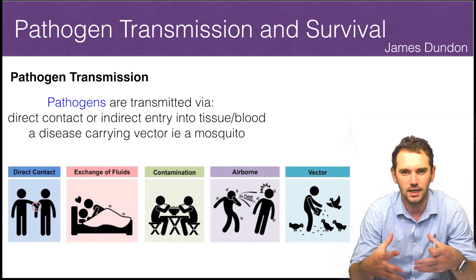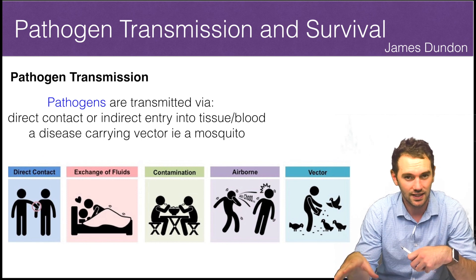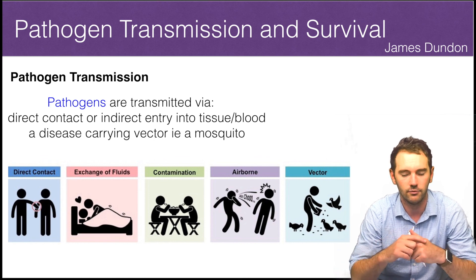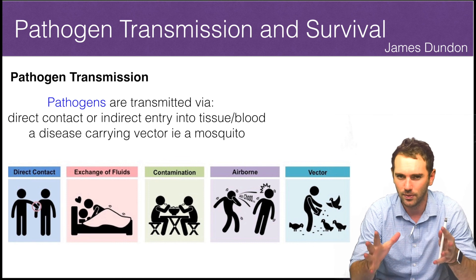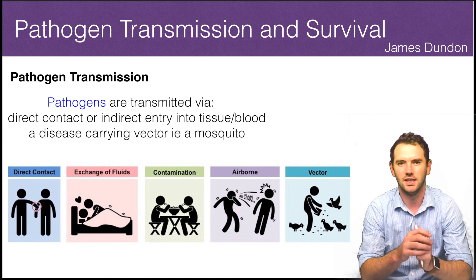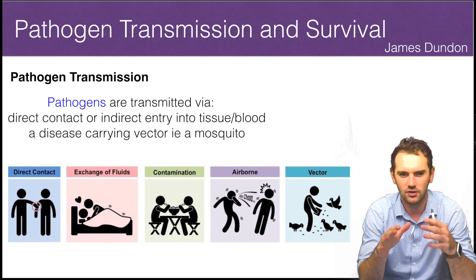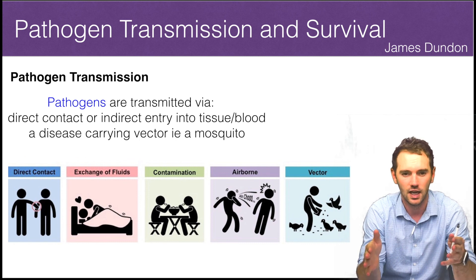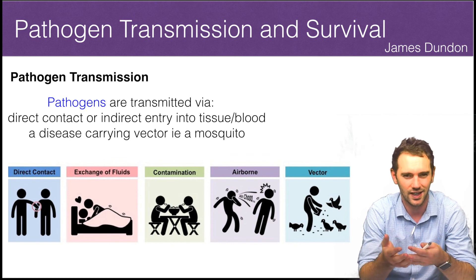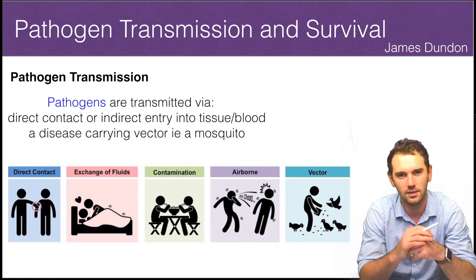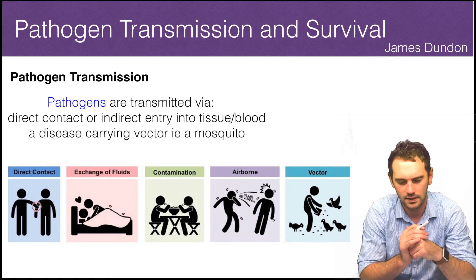An indirect version might be: I sneeze, I put my hand on an escalator, and the next person puts their hand there and contracts it from me indirectly. Bathrooms are a big problem with this — in Australia, to get out of a bathroom you have to touch the door. I don't know if the person before me has washed their hands, so you can't always guarantee the person before you has done that.